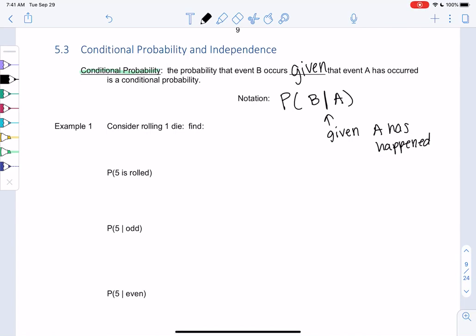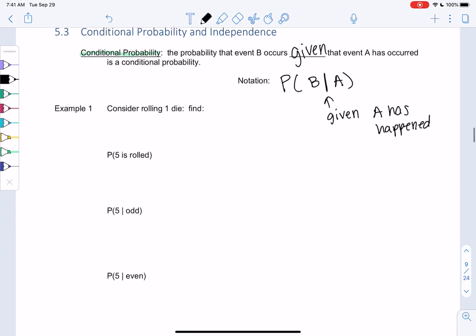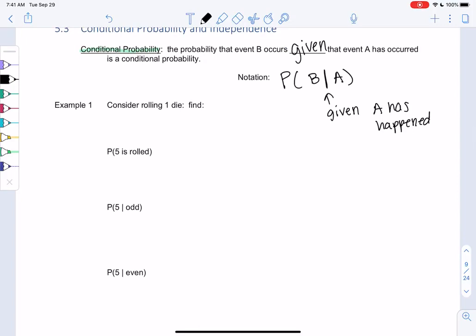So let's look at some examples. So we've already looked at rolling a die, right? If we want to know the probability of rolling a 5, that's just 1 out of 6. There's no given here. These are probabilities we've already done. So it's 1/6, 1 divided by 6.